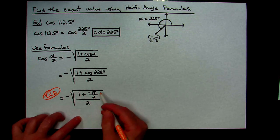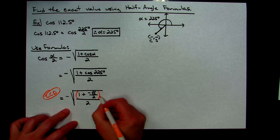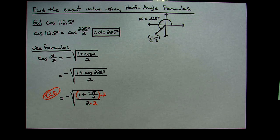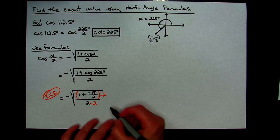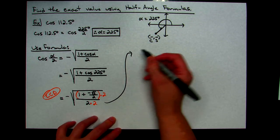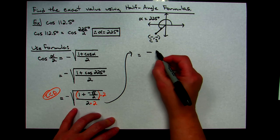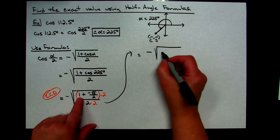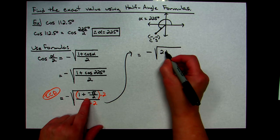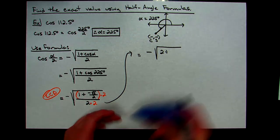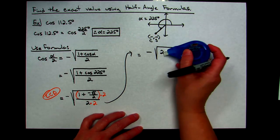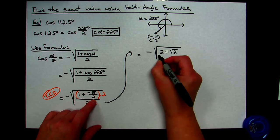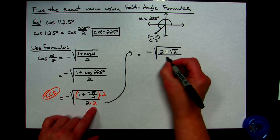The best way to simplify a complex fraction is to multiply through by the least common denominator, which is 2. Multiplying both numerator and denominator by 2 eliminates the complex fraction. Distributing the 2 in the numerator gives 2 minus √2, and the denominator becomes 2 × 2 = 4. So we have negative square root of (2 − √2) all over 4.